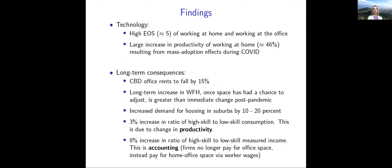What we find: we have an elasticity of substitution of working from home versus the office of somewhere around five. We see a very large increase in the productivity of working from home during the pandemic — we infer that based on the pre-pandemic work-from-home hours worked and the post-pandemic expectations. This was not because there was actual technological innovation during the pandemic; it was because of mass adoption effects.